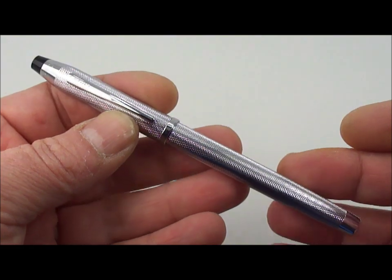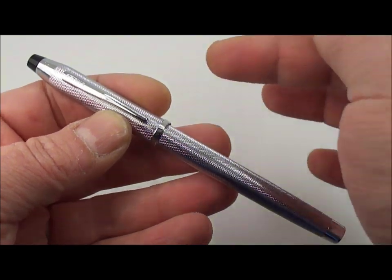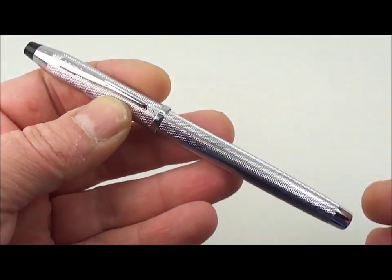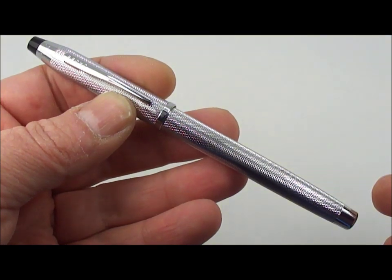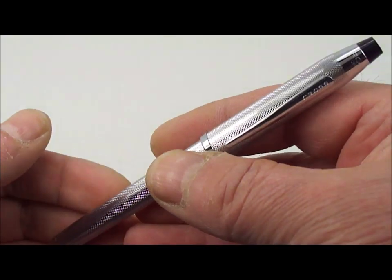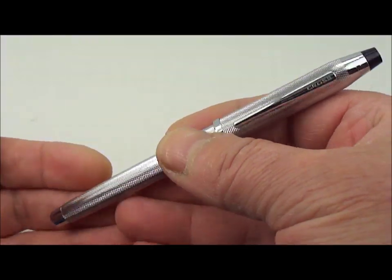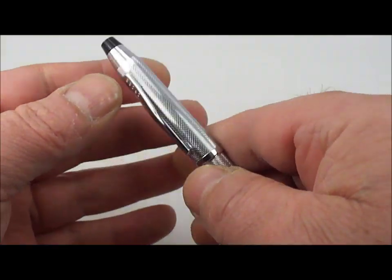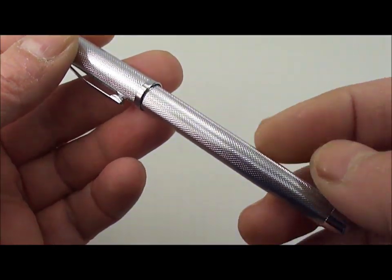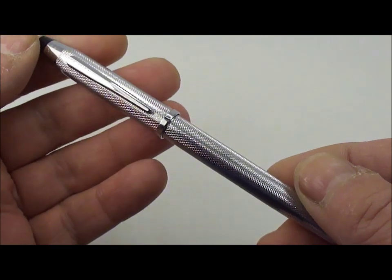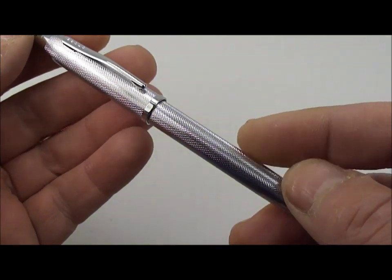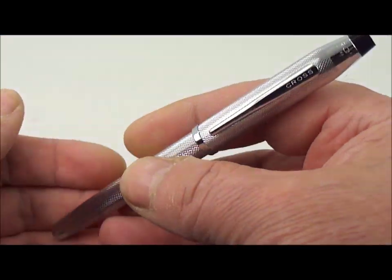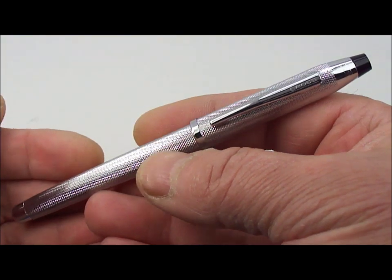This particular one, the Cross Century 2, from the top of the cap there to the bottom is approximately 136 millimeters capped, and the diameter of the barrel is approximately 9 to 10 millimeters. The original Cross Century was a little bit thinner.